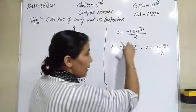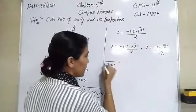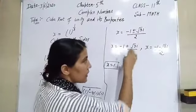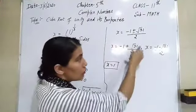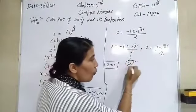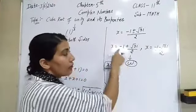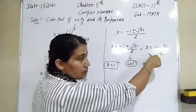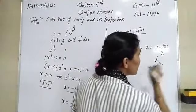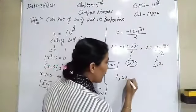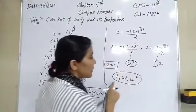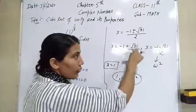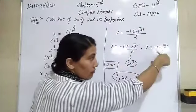The first root is 1. We represent the second root by the symbol omega (ω), so ω = (−1 + √3·i) / 2. When you square omega, you get the third root, which is ω². So the cube roots of unity are 1, ω, and ω².